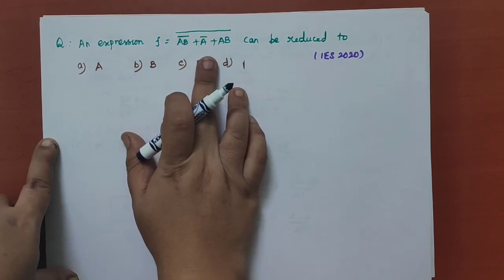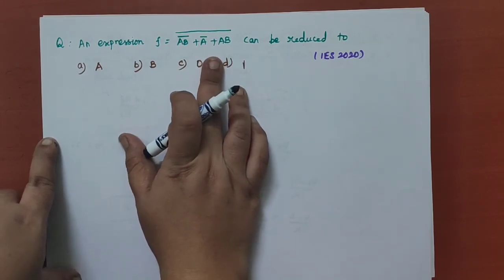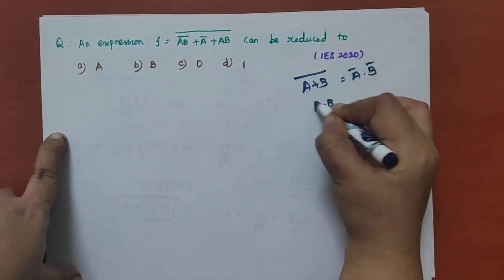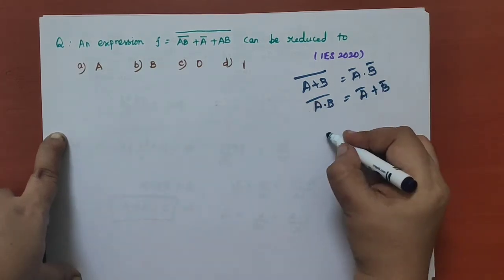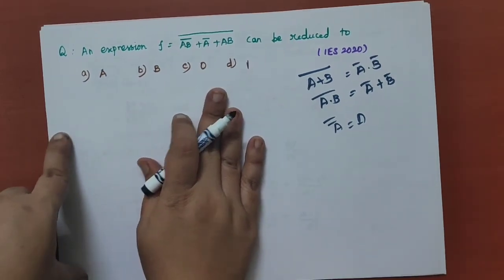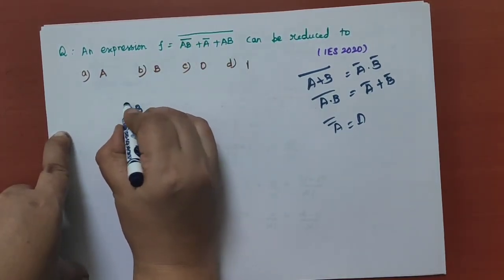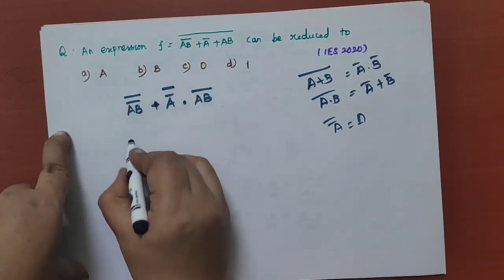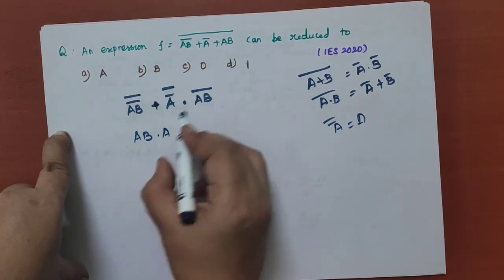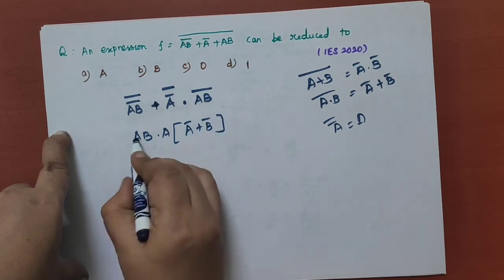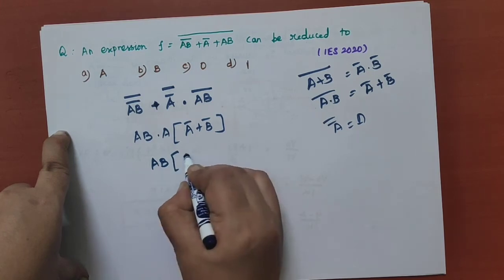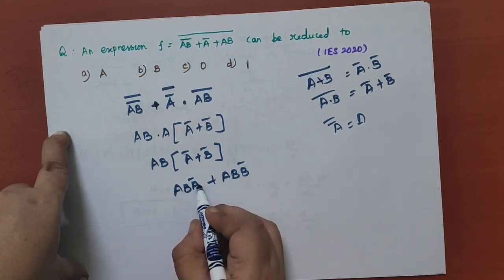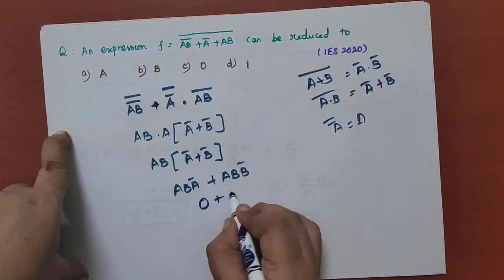An expression can be reduced using two theorems: De Morgan's theorem and the involution theorem. De Morgan's theorem states: (A plus B) bar equals A-bar dot B-bar, or (A dot B) bar equals A-bar plus B-bar. The involution theorem states: A-bar-bar equals A. Simplifying the given expression using these theorems, we get AB dot (A-bar plus B-bar), which expands to AB·A-bar plus AB·B-bar. Since A·A-bar equals 0, the answer is 0.